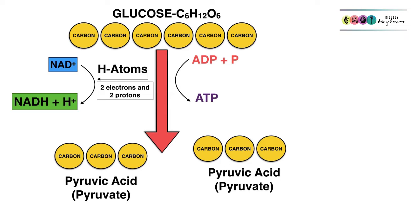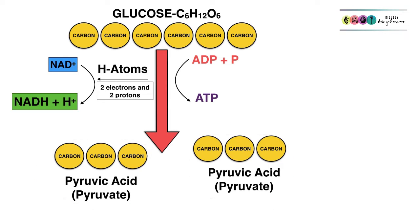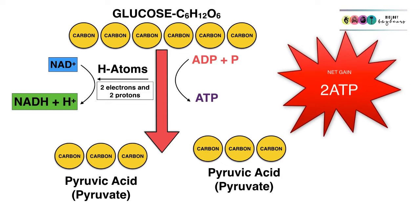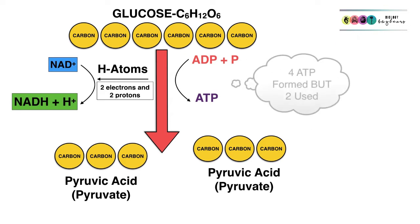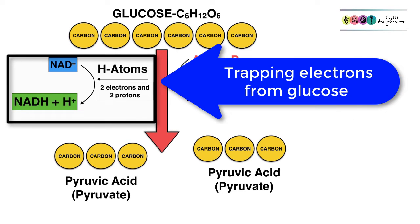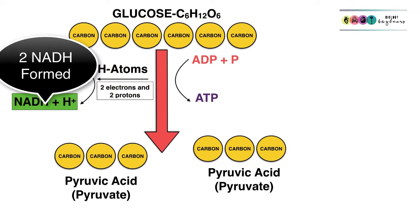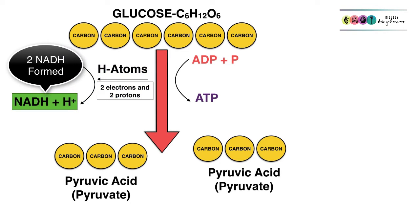At the end of glycolysis, glucose has been split into two new three-carbon molecules called pyruvic acid, or pyruvate. This splitting results in the formation of a net gain of two ATP molecules — two were used up in getting the reaction going. Hydrogen atoms are also removed from glucose, and their electrons get picked up by NAD+ to form NADH, with the other proton going into solution. Two NADH molecules are formed at the end of glycolysis.